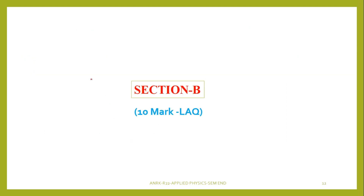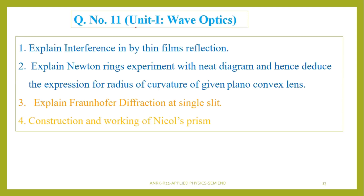When it comes to Section B, each question carries 10 marks and we have to write 5 questions. For question number 11, you can see two colors. Basically from each unit there will be two parts because each question carries Part A or Part B. Two questions they will ask and one question we have to write. For people who are not able to cover the total syllabus in a short span of time, focus on chapters with a single color so that you can answer 5 out of 5 questions. The key topics are: explain interference by thin films and reflection, Newton's ring experiment, Fraunhofer diffraction at single slit, and construction and working of Nichol's prism. These four questions cover the first unit.